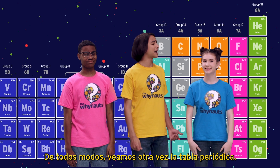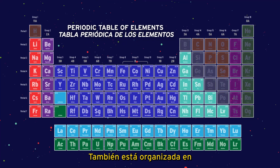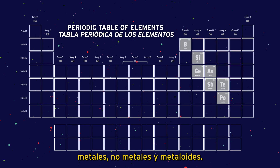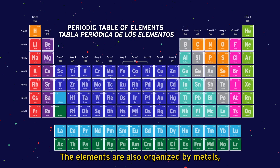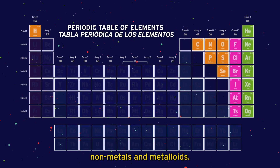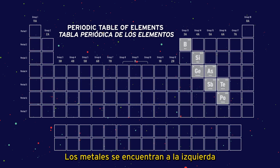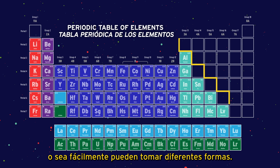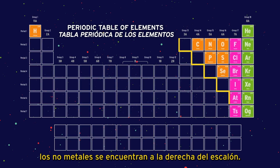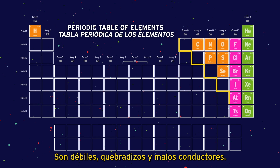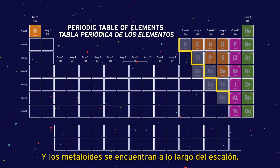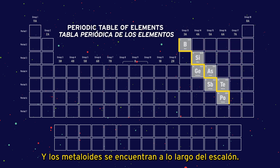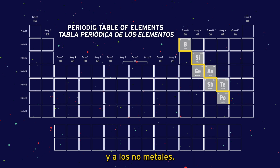Anyway, let's look back at the periodic table. It's also organized into metals, nonmetals, and metalloids. Metals are located to the left of the stair step — they have a shiny luster, are good conductors, and are malleable, or easily formed into different shapes. With the exception of hydrogen, nonmetals are located to the right of the stair step — they are dull, brittle, and poor conductors. And metalloids are located along the stair step and can have properties similar to both metals and nonmetals.